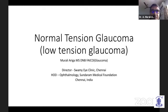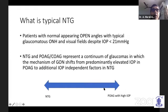Normal tension glaucoma, also called low tension glaucoma, is defined as patients with normal appearing open angles with typical optic nerve head damage and visual fields typical of glaucoma, but with IOP less than 21 on at least more than one occasion. Normal tension glaucoma and primary open-angle glaucoma represent a continuum, with the mechanism shifting from predominantly elevated IOP in chronic OAG to additional IOP-independent factors in NTG.